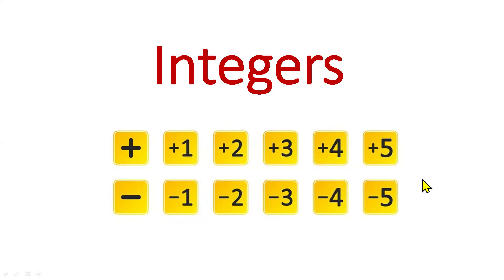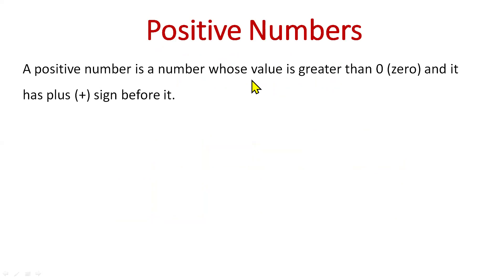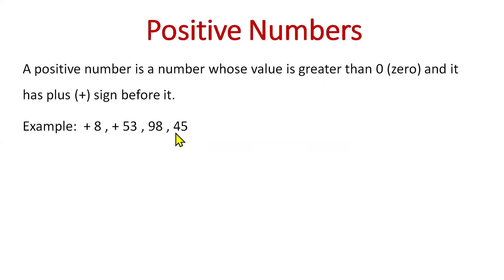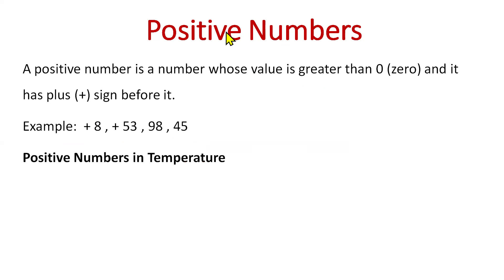Hi everyone, today we'll learn about integers. Integers aren't your average everyday numbers — they don't just hang out on the positive side of life, they also explore the mysterious depths of the negative side. Before integers, you should know what positive and negative numbers are. A positive number is a number whose value is greater than zero. It has a plus sign before it, for example plus 8, plus 53, 98, 45. Even if a number does not have any sign, we can still say it's a positive number.